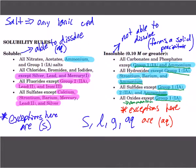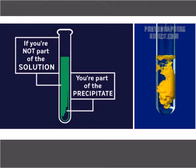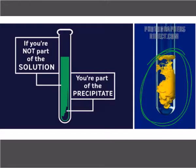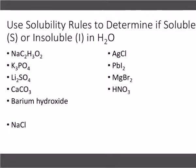I can explain it and talk all day — it doesn't mean anything until we practice. So we're going to jump in and do some practice, take it piece by piece, step by step. We're going to use our solubility rules to determine if they are soluble or insoluble. If it's soluble, put an S. If it's insoluble, put an I. Let's take a look at the first one.